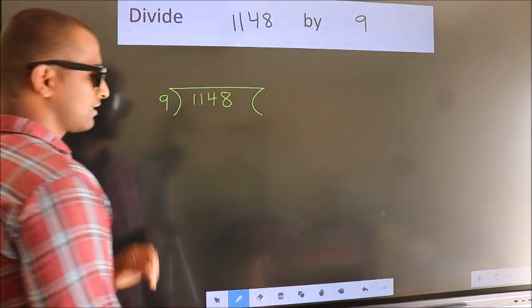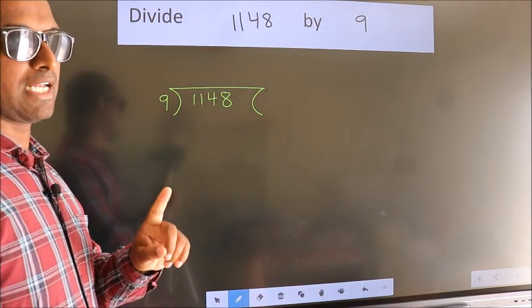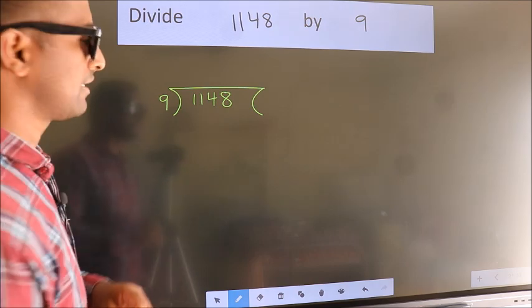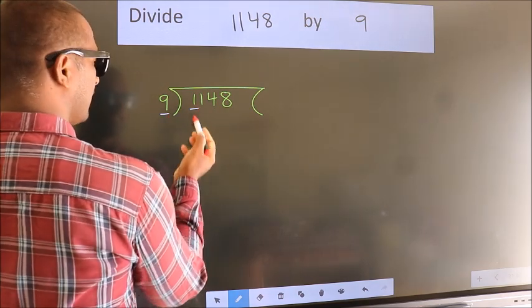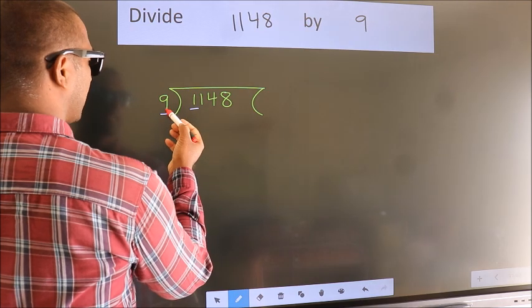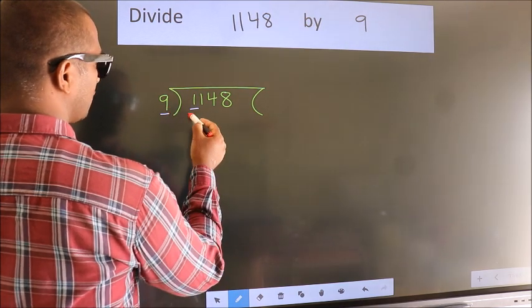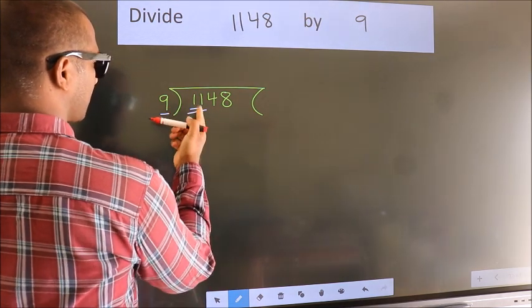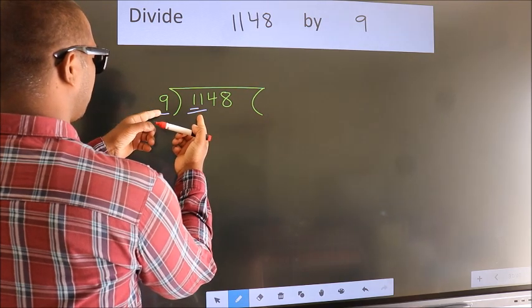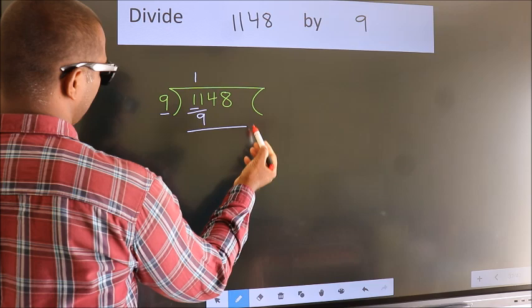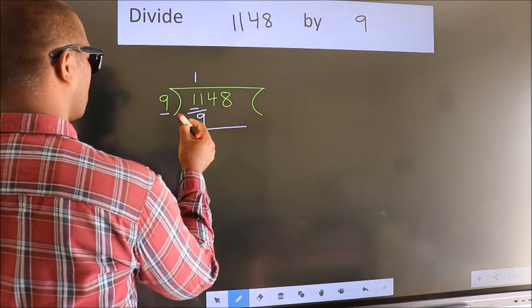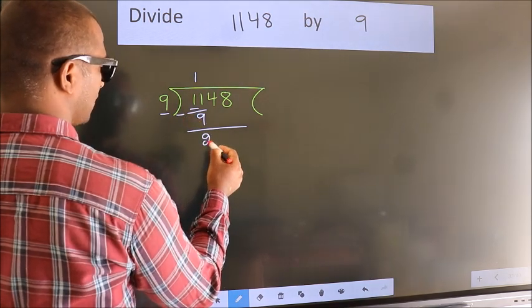This is step 1. Next, here we have 1, here 9. 1 is smaller than 9, so we should take 2 numbers: 11. A number close to 11 in the 9 table is 9 once 9. Now, we subtract. We get 2.